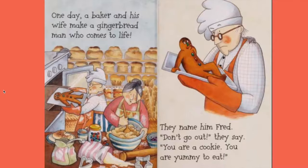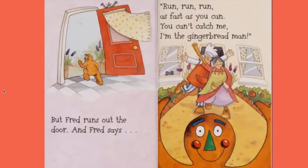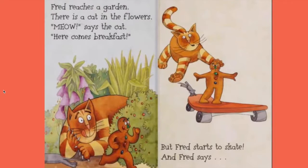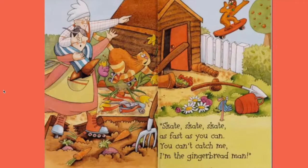You are yummy to eat. But Fred runs out the door and says, run, run, run as fast as you can — you can't catch me, I'm the gingerbread man! Fred reaches a garden. There is a cat in the flowers. Meow says the cat — here comes breakfast! But Fred stops to skate and says, skate as fast as you can — you can't catch me, I'm the gingerbread man.